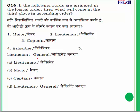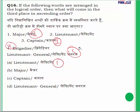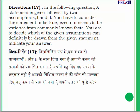Question 16: Arrange military ranks in ascending order. The correct ascending order is: Lieutenant, Captain, Major, Brigadier, Lieutenant General. On third place is Major. The answer is option B.